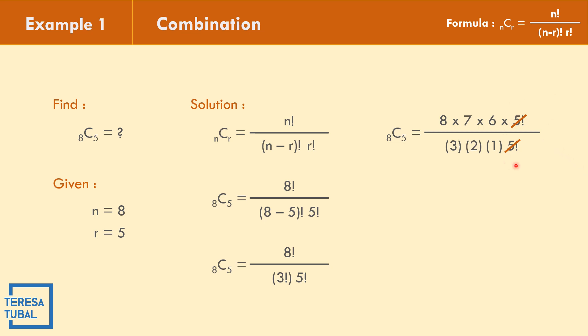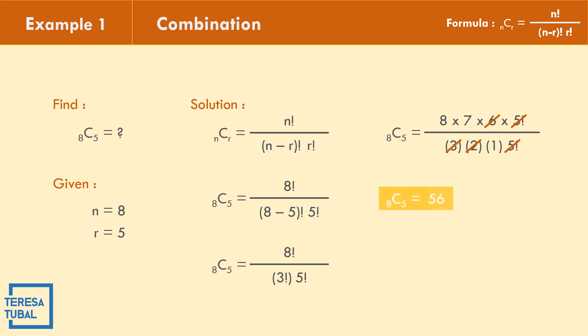Since 5 factorial equals 5 times 4 times 3 times 2 times 1, and 3 times 2 equals 6, we cancel the 6 in the numerator. So the combination of 8 objects taken 5 at a time equals 8 times 7, which equals 56.